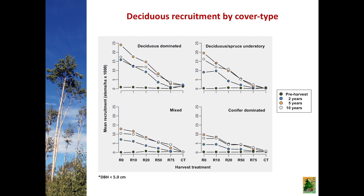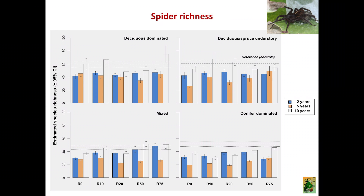If we are looking at all these forest changes, we would expect that biodiversity will change as well, as Ellen, Colin, and John showed. Now let's look at some results. I'm going to show three slides in the same format — one for spiders, one for beetles, and one for songbirds — looking at number of species according to retention.